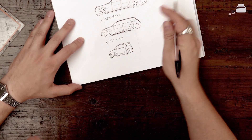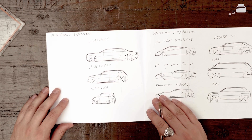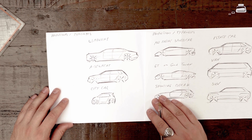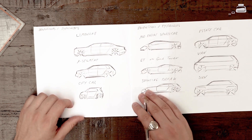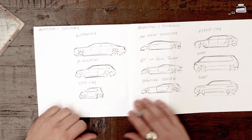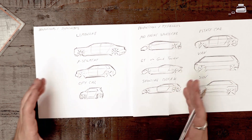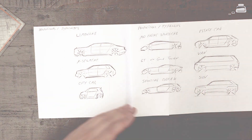That's it really — all together nine very distinctive proportions, all defined by their use case and by the technical package, all the way from a really small city car to a van, both on the luxury end and the economic end of the spectrum.